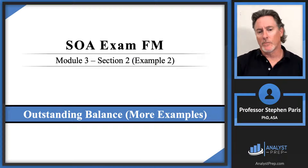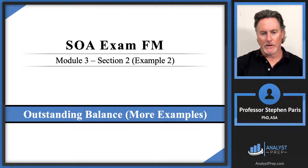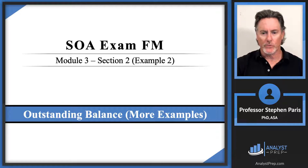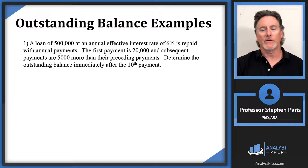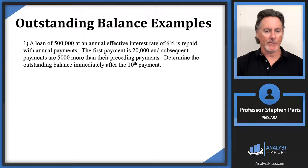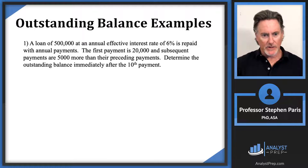In this video we're going to do a couple more examples from section 2 of module 3. These are good examples that illustrate what goes on generally with these loans. The first example: a loan of $500,000 at an annual effective interest rate of 6% is repaid with annual payments. The first payment is $20,000 and subsequent payments are $5,000 more than their preceding payments.